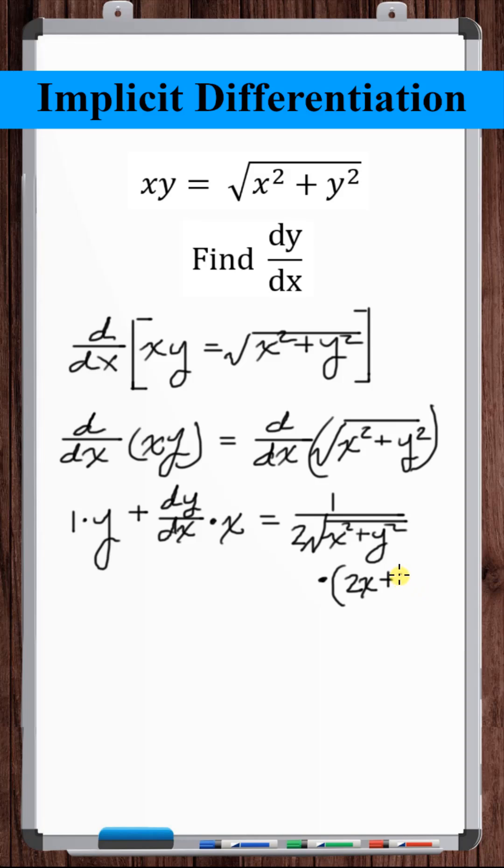The derivative of something squared is two times that something, times the derivative of that something. The derivative of y with respect to x is just dy/dx.